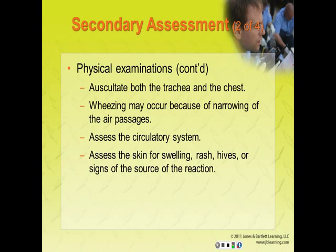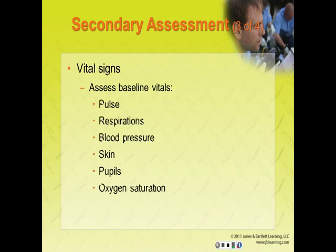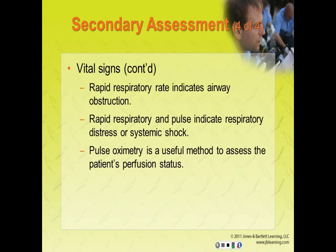If the reaction continues, the body will have difficulty supplying blood and oxygen to the organs, and one of the first signs of this will be altered mentation. Get your vital signs: assess baseline vitals including pulse, respirations, blood pressure, skin, pupils, and oxygen saturation. Rapid respiratory rate indicates potential obstruction. Rapid rate of respiration and pulse may indicate respiratory distress or systemic shock; fast pulse and hypotension are ominous signs indicating systemic vascular collapse and shock. The use of monitoring devices is important — pulse oximetry can be useful to assess perfusion in a patient experiencing an allergic reaction.